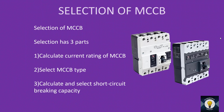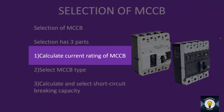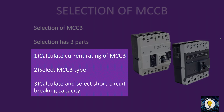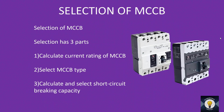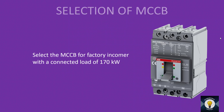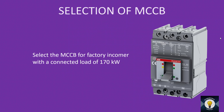How to select an MCCB for your project? MCCB selection has three parts: first, calculation of current rating; second, selection of MCCB type; third, calculation and selection of short circuit breaking capacity. Our scenario is: select the MCCB for a factory incomer with a connected load of 170 kilowatt.